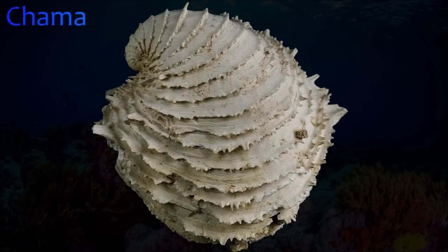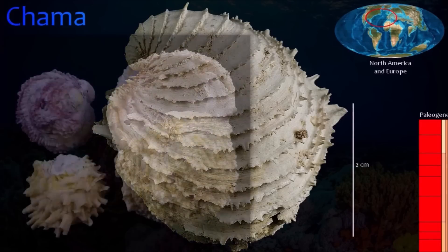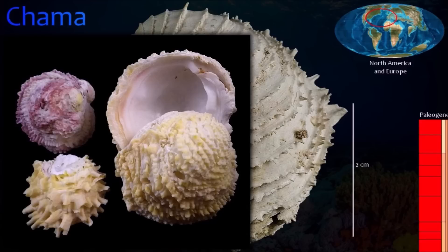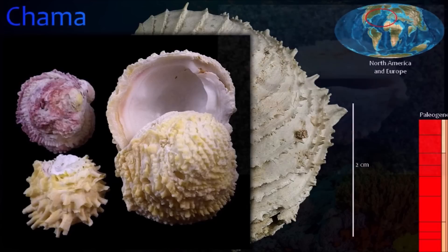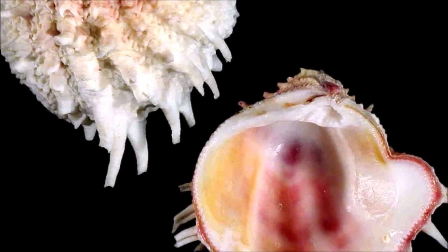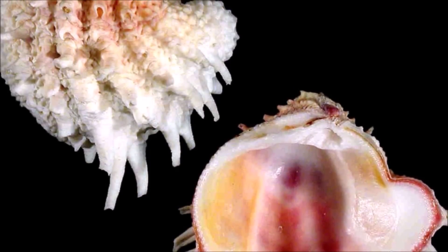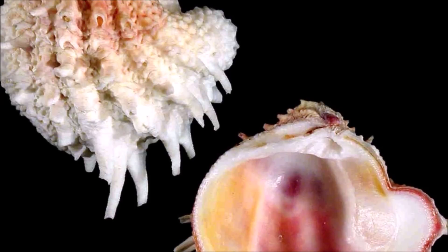Chama is a bivalve with a strongly asymmetrical shell. The animal is attached to the seabed by its larger, more convex left valve throughout its life. The right valve is smaller and much flatter than the left, although still convex. Both valves had well-developed beaks, and the valves grew spirally along a horizontal plane. The surface of each valve shows concentric frills and radially arranged, flattened spines, giving the shell a scaly appearance. Internally, there are two muscle scars where the adductor muscles attach in life.